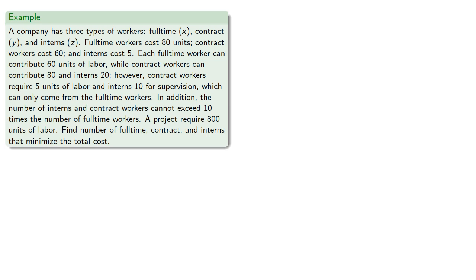However, contract workers require 5 units of labor and interns 10 for supervision, which can only come from full-time workers. In addition, the number of interns and contract workers cannot exceed 10 times the number of full-time workers. A project requires 800 units of labor. Find the number of full-time, contract, and interns that minimize the total cost. So our costs are 80 times full-time workers, 60 times contract, and 5 times the interns.